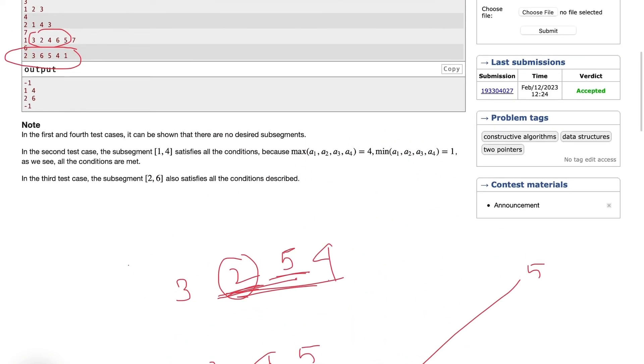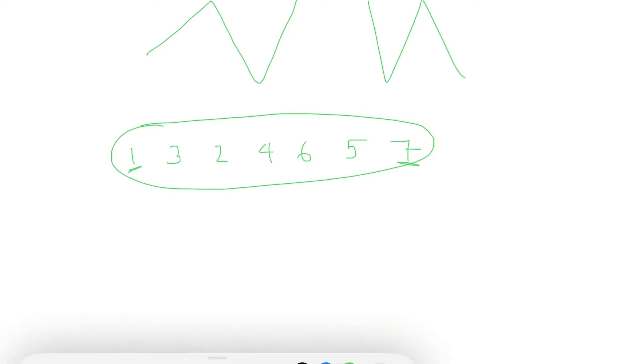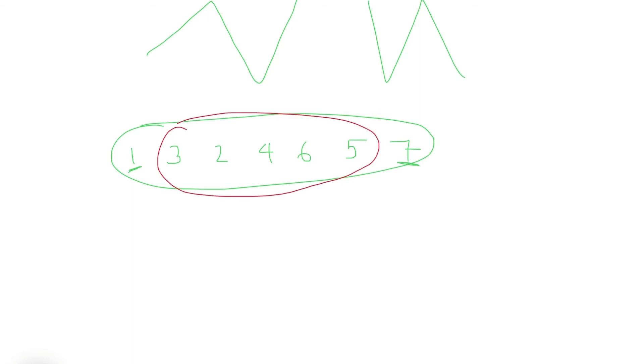How do we find this kind of pattern efficiently? We can't check every possible sub-array. The key insight is: take the whole array, check if it's valid. If not — say the array is 1, 3, 2, 4, 6, 5, 7 — the smallest value is at the left end and the largest at the right end, so we eliminate both. Then we check the inner sub-array: 3 is not the smallest, 5 is not the largest. This is a valid case.